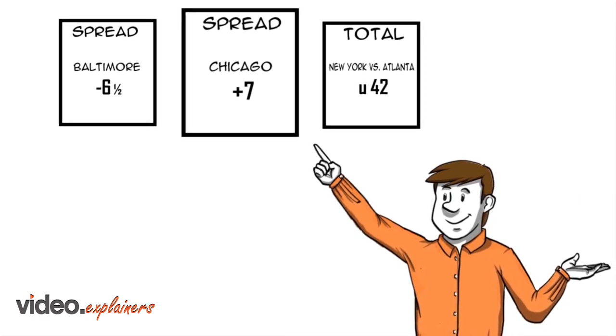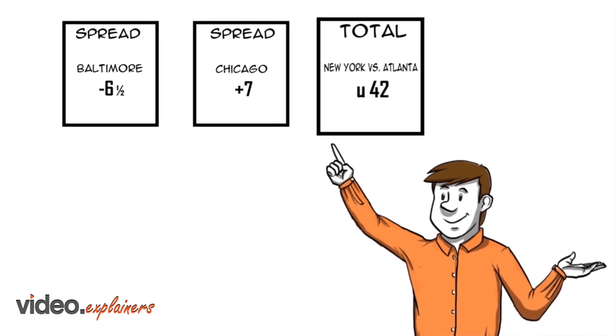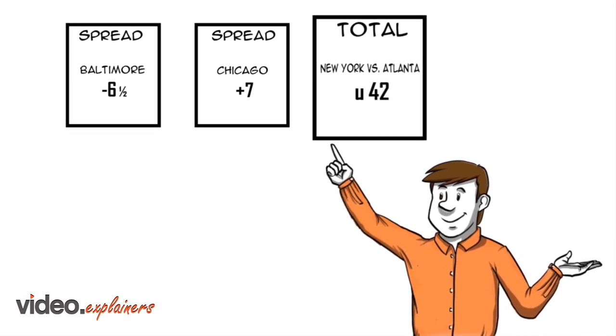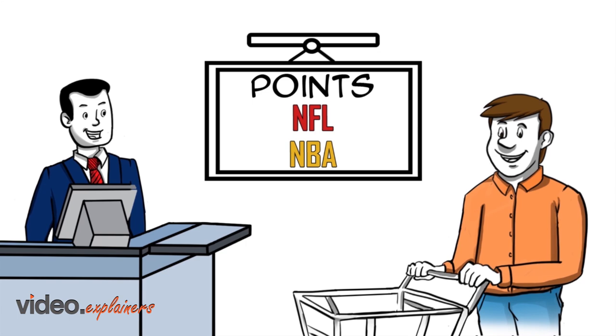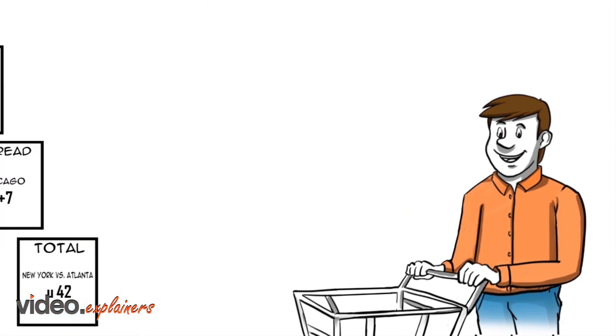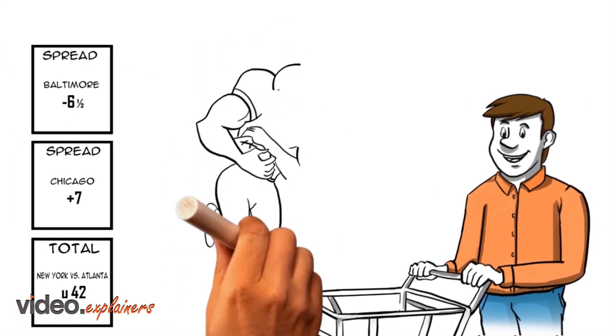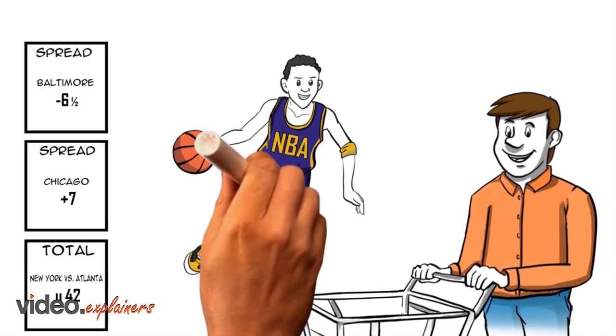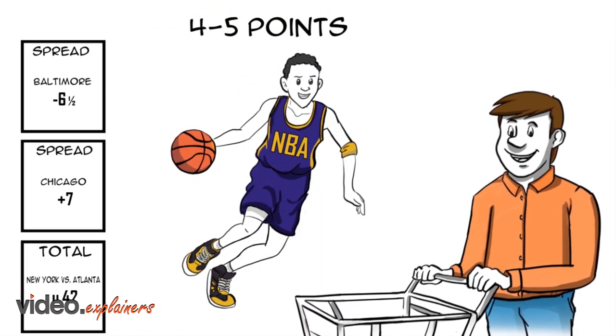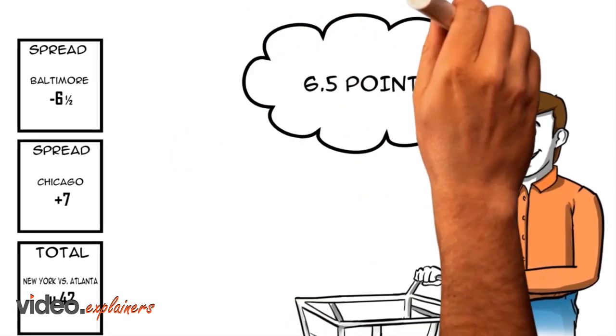Next, buy points to shift each line in your favor. NFL bettors can buy 6 to 10 points. NBA bettors can buy 4 to 5 points. Half-point increments are possible.